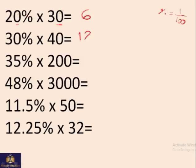The same happens here. 30% of 40, so these two zeros are cancelled, so we are left with 3 times 4, which is 12. 35% of 200, now there are two zeros here, again these two zeros go away, so we are left with 35 times 2, that is 70. 48% of 3000, two zeros go away, so we just have to multiply 48 by 30. 48 by 3 is 144, and the zero comes here.